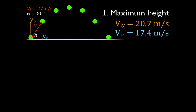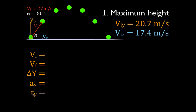Now we can solve our three problems, with maximum height being the first. We're going to use our kinematic equations — the maximum height going up into the air — so we're going to use our initial velocity in the y direction to answer this question. I like to write down all five of the variables: initial velocity, final velocity, change in position, acceleration, and change in time. Then we fill in what we know and what we don't know.